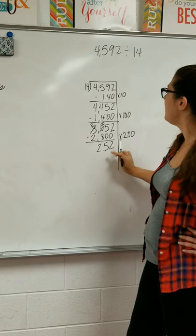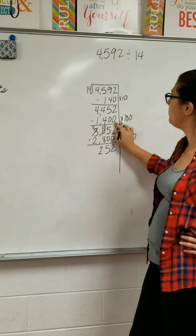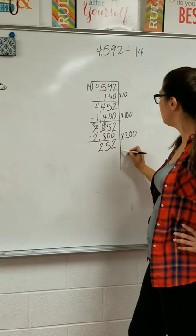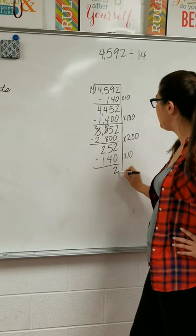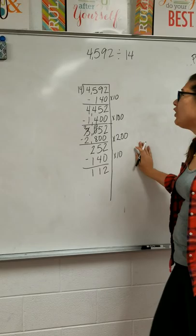So next I'm going to multiply this times 10 again. I can't do times 100 because that multiple would be 1400. That's too big. The multiple must be smaller than this number that I have right there. So I'm going to say 14 times 10 equals 140. This is going to be 112.